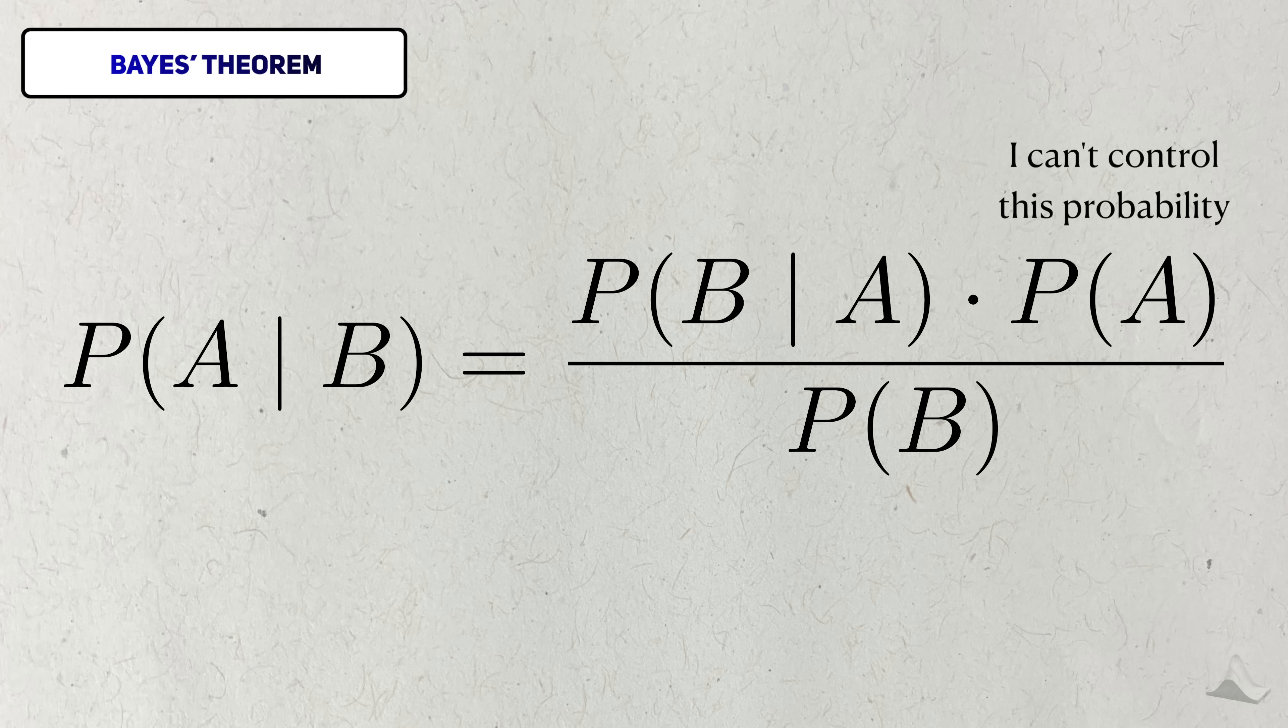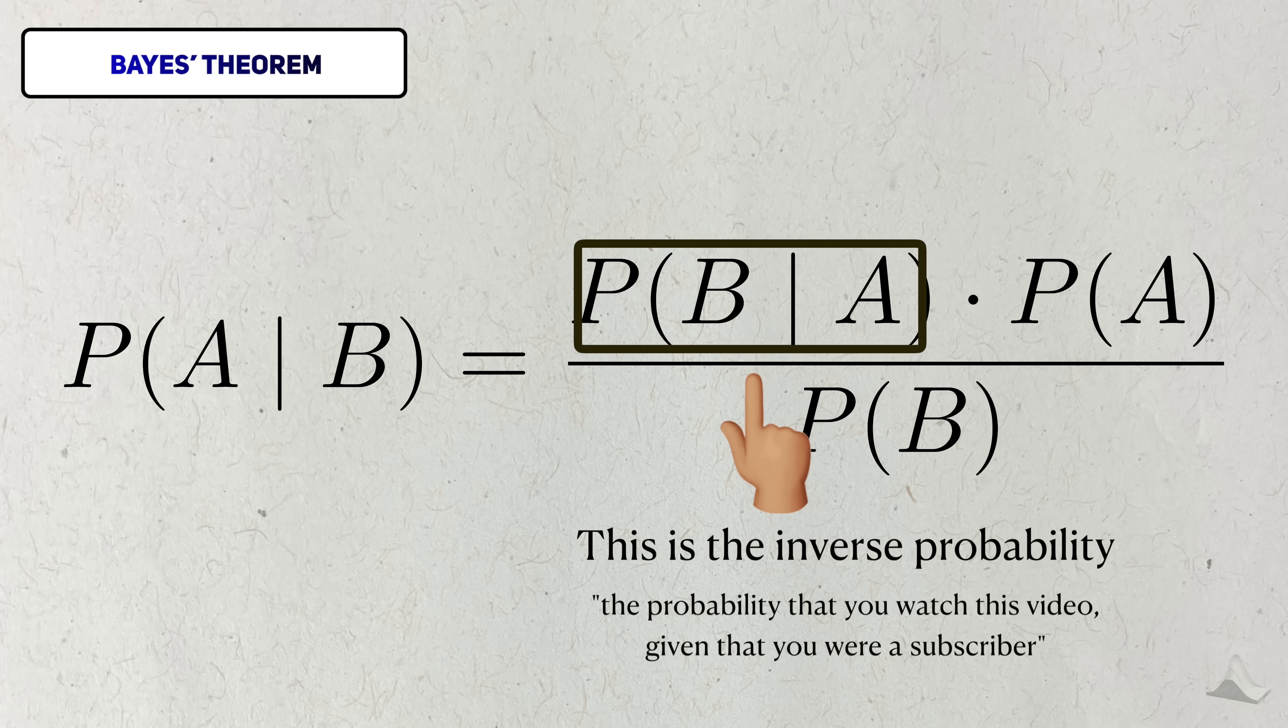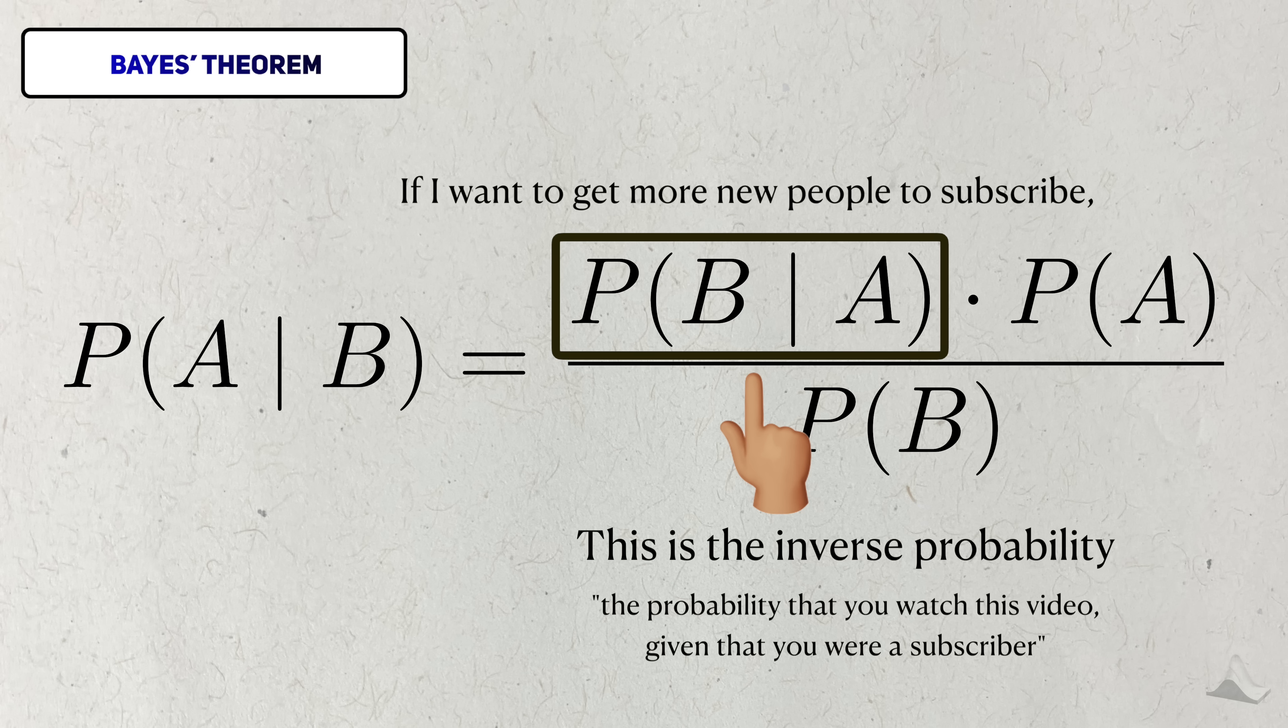But what's that mean? While I can't control your prior probability of watching this video, I can control these other events involving you watching this video. This term is the conditional probability that you watched this video given that you were a subscriber. According to Bayes' theorem, if I want to improve my chances of getting a new person to subscribe, I need to increase the probability that my current subscribers watch my videos.